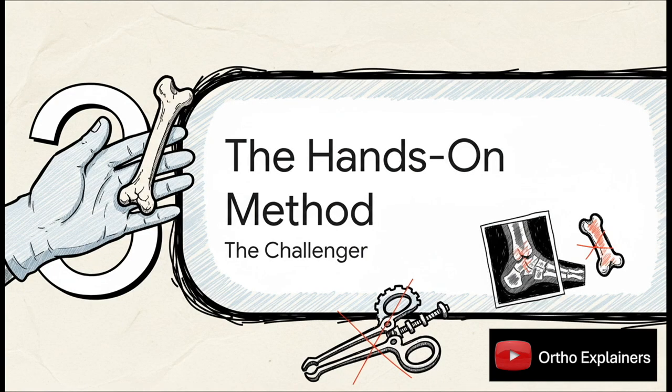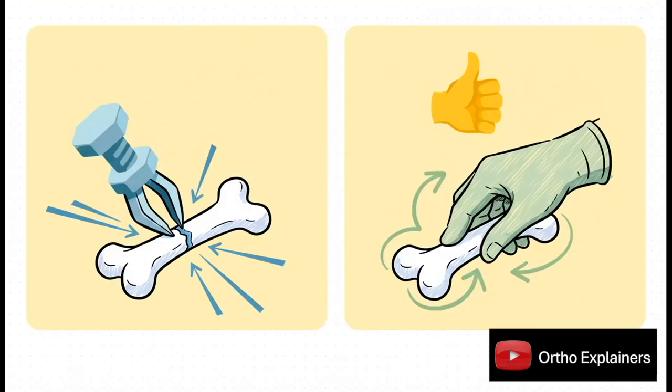And that brings us to our challenger, a much simpler, more back-to-basics approach that doesn't rely on a fancy tool, but on the surgeon's own skill and their sense of touch. So let's put them side by side. On one hand, you have the clamp. It's all about mechanical force, just squeezing those bones together. The big assumption is that this is more precise, more stable. But on the other side, you've got manual reduction. Here, the surgeon literally uses their thumb to feel and push the fibula right back into its natural groove against the tibia. It's way simpler, sure. But the big question has always been, is it really reliable?